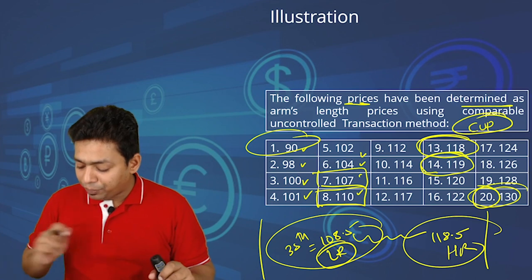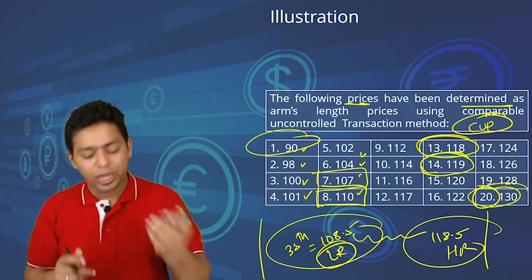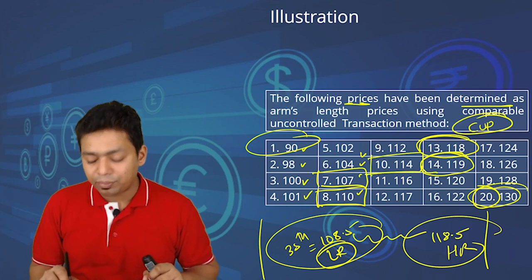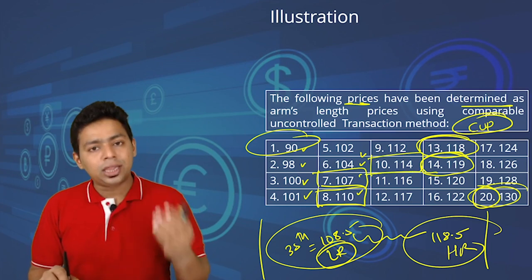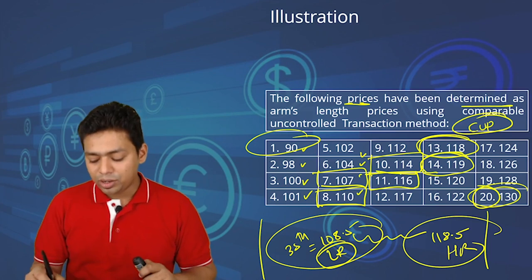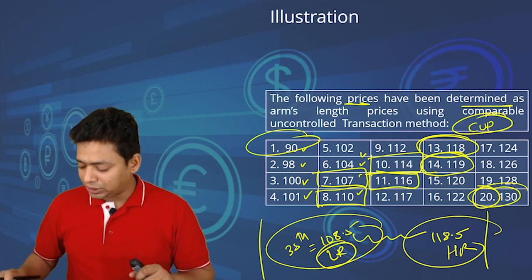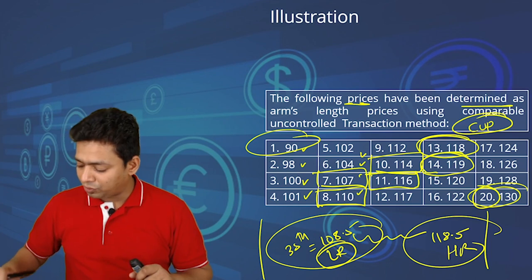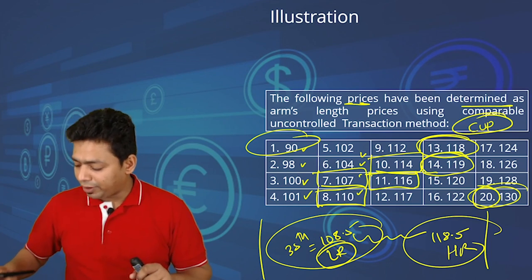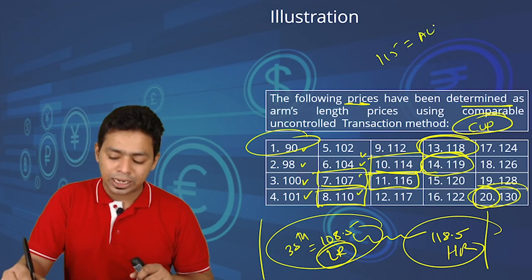For the median: 20 × 50/100 = 10, also a whole number. We take the average of the 10th and 11th values: 114 plus 116 equals 230, divided by 2 equals 115. So 115 is the arm's length price if the transaction falls outside the range.